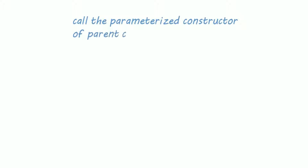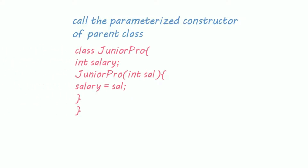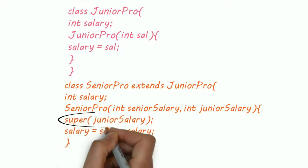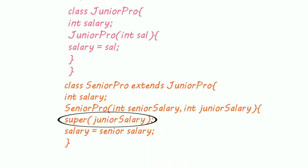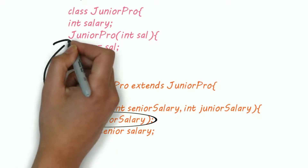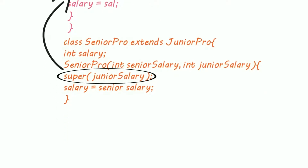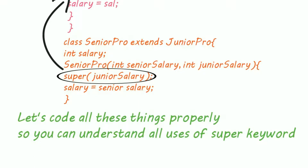The final and most-used use of the super keyword is to call the parameterized constructor of the parent class. Suppose I created two classes again — JuniorProgrammer and SeniorProgrammer — and both have parameterized constructors. I want to call the parameterized constructor of JuniorProgrammer from the constructor of SeniorProgrammer. I can use the super keyword, pass the arguments, and depending on the arguments, the JVM automatically calls the matching constructor of the parent class. If this is getting confusing, let's understand it practically.